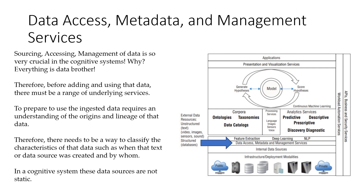The next layer is data access, metadata, and management services. The sourcing, accessing, and management of data is critical in any system, and it is no different in a cognitive system. Everything is data here — if you are not getting the data right, not analyzing it right, and insights are not generated right, the entire system will collapse. Before adding or using the data, there must be a range of underlying services that you need to provide.